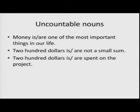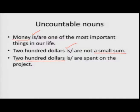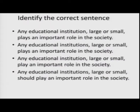Uncountable nouns like 'money' take a singular verb: 'money is.' But with a specific amount like '200 dollars,' there are two possibilities. '200 dollars is not a small sum' — here you treat it as one entity, so you use 'is.' '200 dollars are spent on the project' — here you are counting each dollar individually, so you use 'are.' So the context determines which form to use.